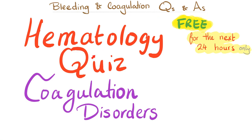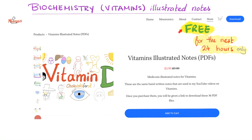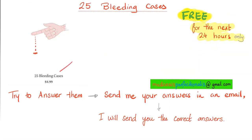Moreover, bleeding and coagulation questions and answers are now free for the next 24 hours only. My vitamins PDF notes are free for the next 24 hours only. My 25 bleeding cases are free for the next 24 hours only. When you download this, it's going to have the questions without the answers. To get the answers, just send me an email containing your answers, and I will tell you the correct answers.